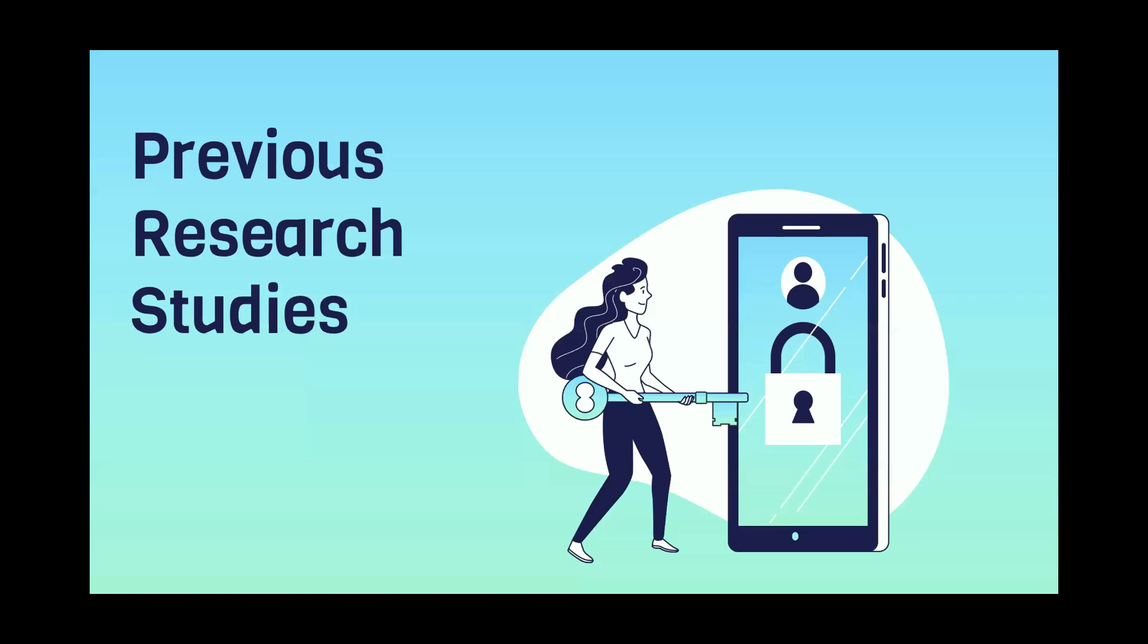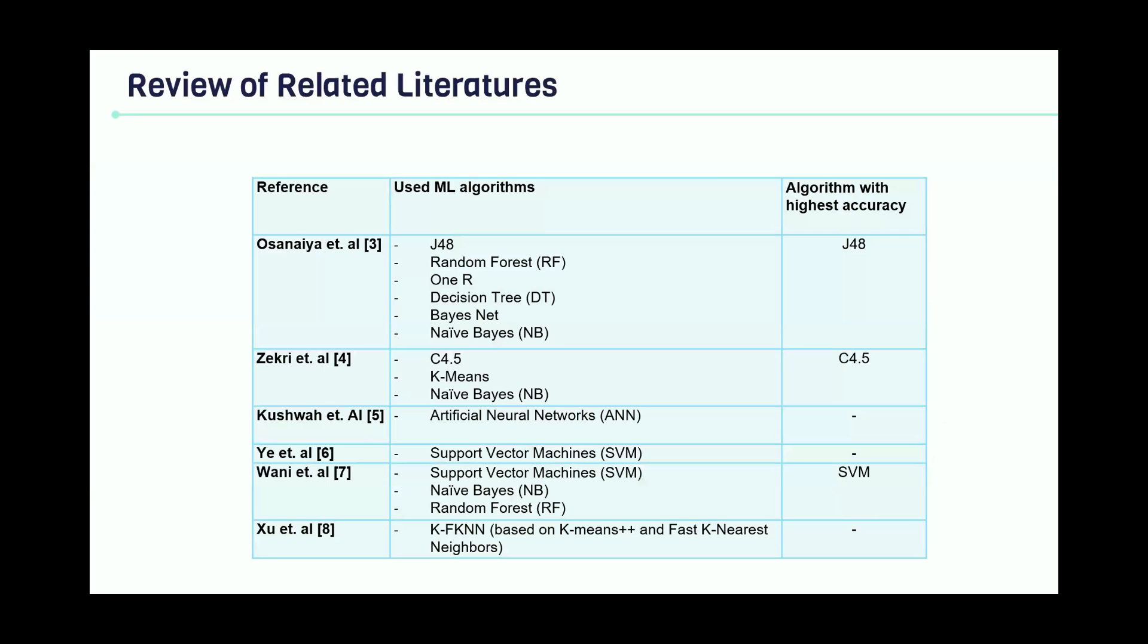For sure, before starting any research or any case studies, you have to go and dig deeper into the previous studies. Me and my team tried to go through many previous works. However, we tried to focus on 14 significant papers. In our opinion, it will add value to our work. We try to divide them, as you can see in this table, by the paper name, the machine learning algorithm used, and what is the best algorithm with high accuracy shown in this study.